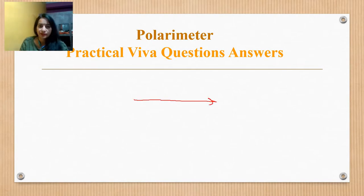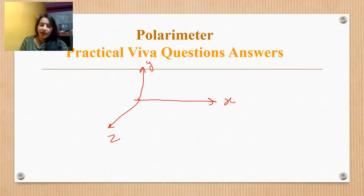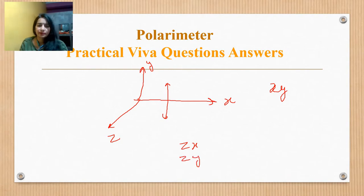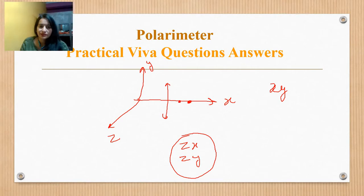Consider a 3-coordinate system: x is the direction of propagation, y is the perpendicular direction, and z is perpendicular to both x and y. The vibration is shown in the y direction and is contained in the x-y plane. The plane containing the vibration is called the plane of vibration, and the other plane — x-z — has no vibration.